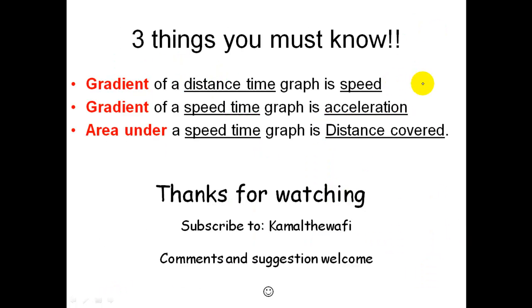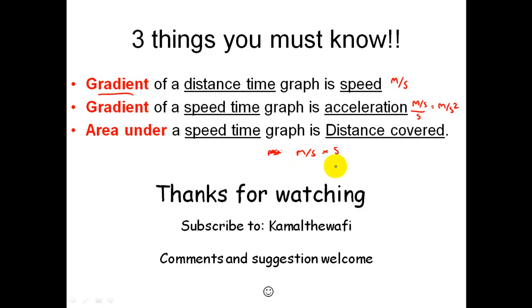There are only three things we've really learnt today. First, the gradient of a distance-time graph tells you speed — metres divided by seconds gives m/s. Second, the gradient of a speed-time graph tells you acceleration — metres per second over seconds gives metres per second squared. Third, the area underneath the speed-time graph tells you distance covered — metres per second multiplied by seconds, the seconds cancel, leaving metres. Always read the axis of the graph. I hope you found this useful — please subscribe, and any comments or suggestions are welcome. Thanks for watching.